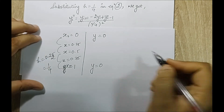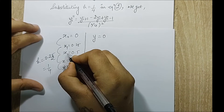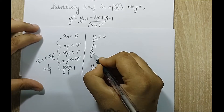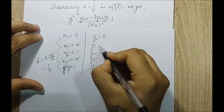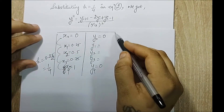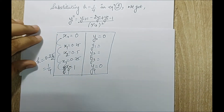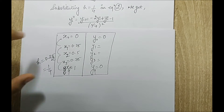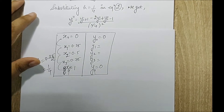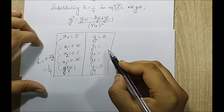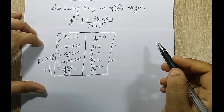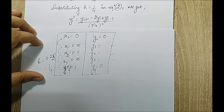I label the grid points x0, x1, x2, x3, x4 and the corresponding values y0, y1, y2, y3, y4. The boundary values y0 and y4 are known; I need to find y1, y2, and y3. Since there are three unknowns, I will carry out three iterations.